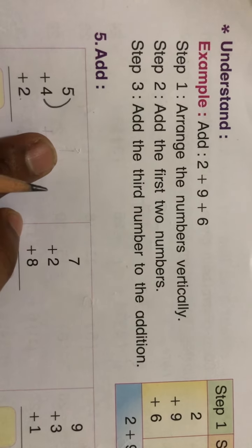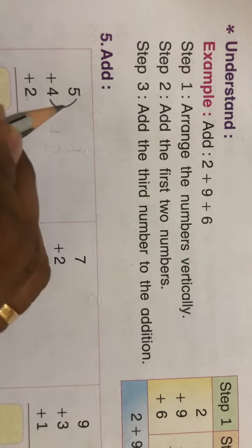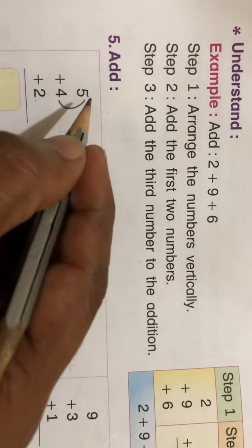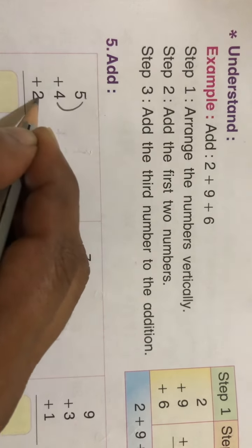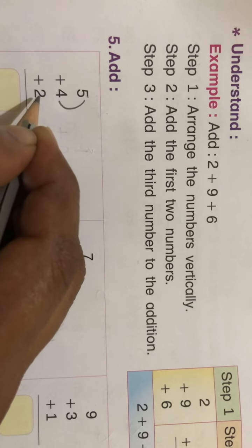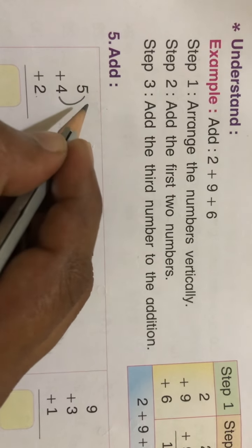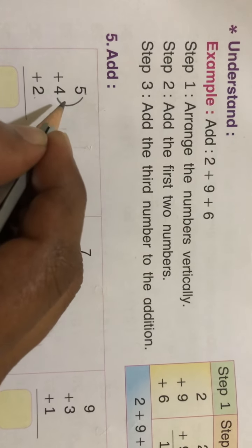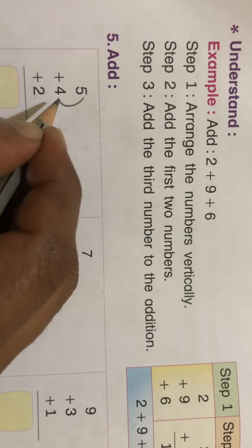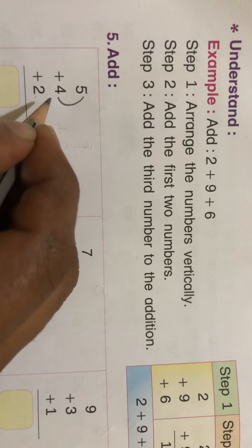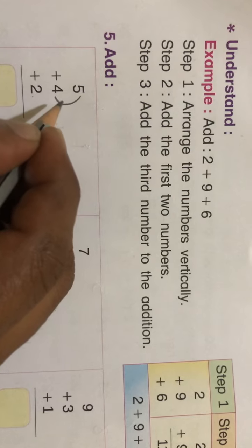As you all can see, there are three addends: 5, 4, and 2. They are all added together, but here we'll make it easy. Three addends, we'll add them by making the parts.